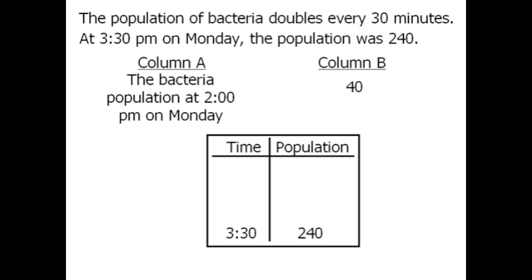Let's find the population 30 minutes earlier at 3 o'clock. Since the population of bacteria doubles every 30 minutes, we know that 30 minutes earlier at 3 o'clock, the population would have been half the population at 3:30. So the population would have been 120.